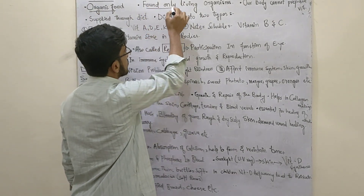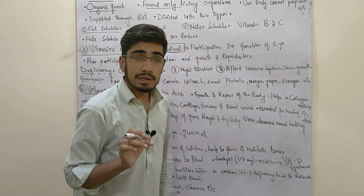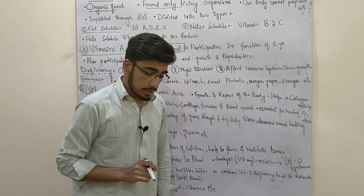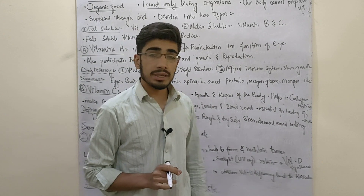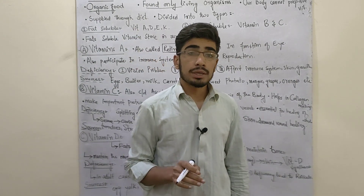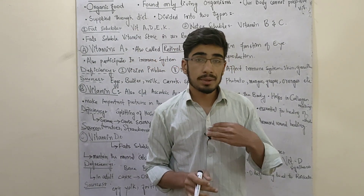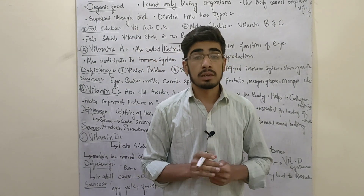Vitamin A is an organic compound found only in living organisms. If you have carbohydrates, lipids, or proteins, you can use them as nutrients.